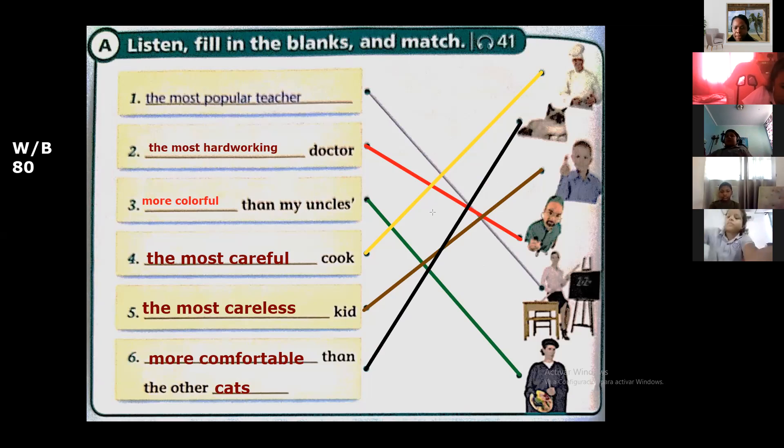Yes, okay. The most popular teacher, the most hard-working doctor, more colorful than my uncle's, the most careful cook, the most careless kid, more comfortable than the other cats. Okay guys, look at here. Can you see this apostrophe here? This apostrophe is so different. If you observe this apostrophe, this comma that is here, miren.